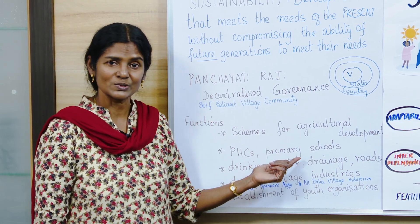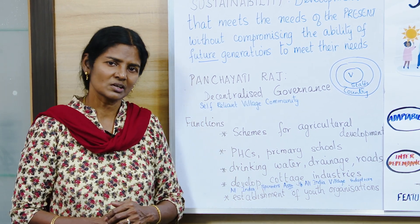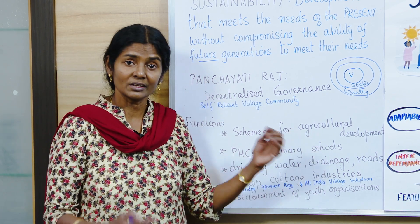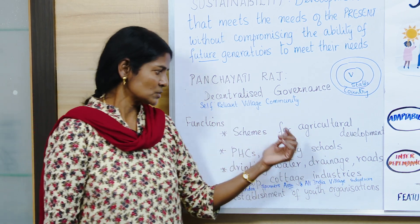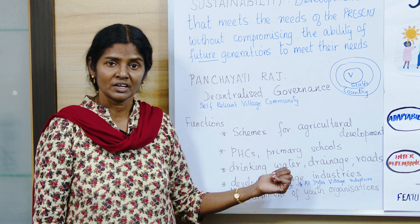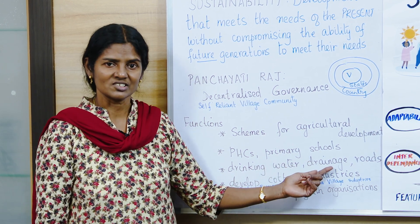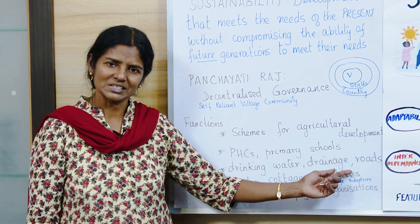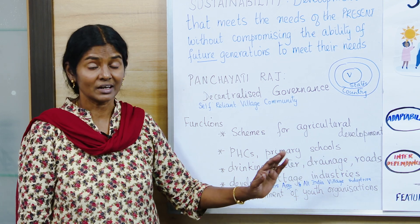Primary schools are another function — you can't expect small children to walk 10 kilometers to reach a school. On a rainy or cold day they wouldn't be motivated, but if the school is in their own village they will be stimulated to attend. Panchayati Raj also caters to drinking water supply, because lack of clean water leads to many diseases. Drainage is equally important, and roads need to be set up and regularly repaired so that connectivity and commuting between places improves.